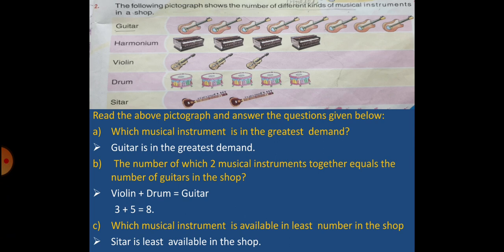B, the numbers of which two musical instruments together equal the number of guitars in the shop. Violin plus drum is equal to guitar because you have seen three instruments of violin and five drum. So 3 plus 5 is equal to 8 which is equal to the number of guitars.